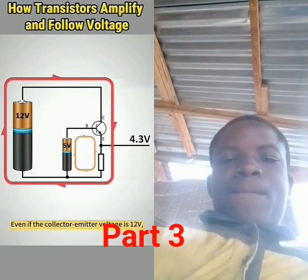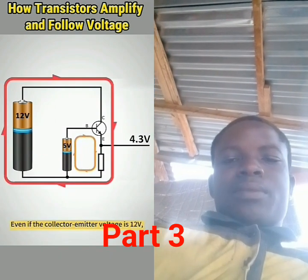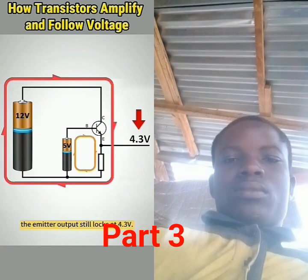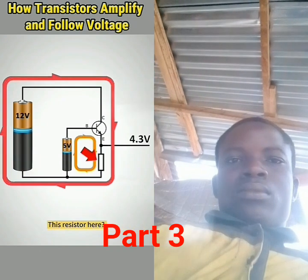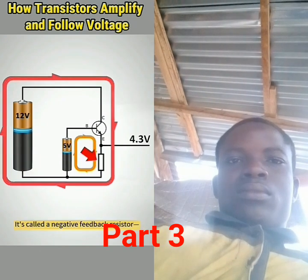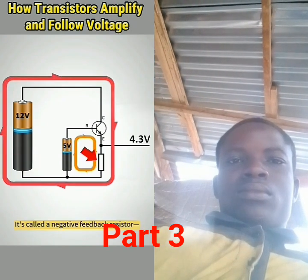Even if the collector-emitter voltage is 12 volts, the emitter output still locks at 4.3 volts. This resistor here is called a negative feedback resistor.